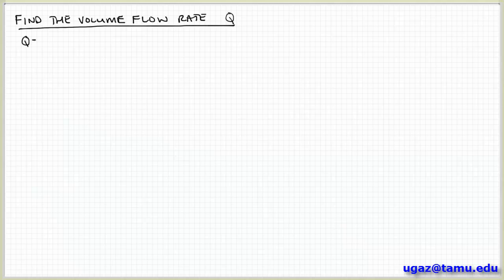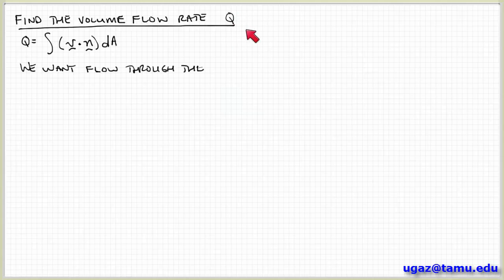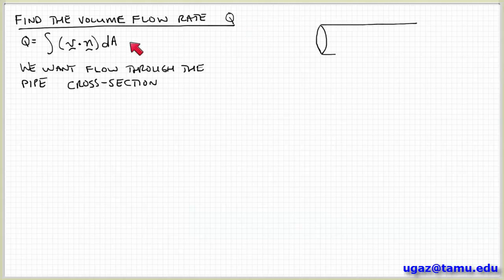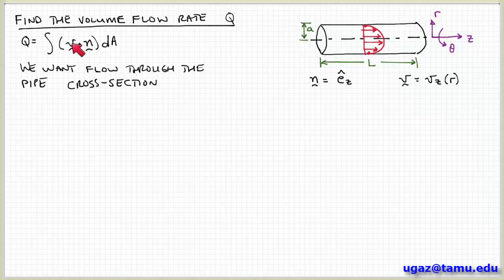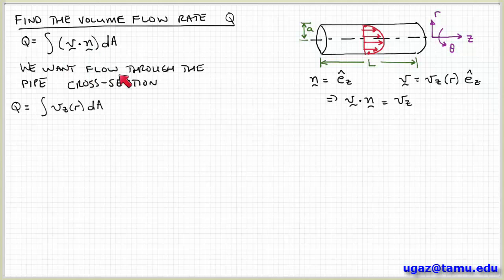Another useful quantity we often want is the flow rate — either the volume flow rate or the mass flow rate. These are related by density: volume flow rate is volume per time, and multiplying by density (mass per volume) gives mass per time. The volume flow rate is defined as the integral over the cross-sectional area of v dot n, which gives the component of flow passing through the surface — the projection of velocity onto a vector normal to the surface.